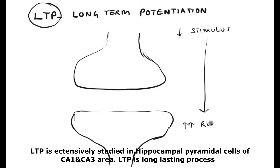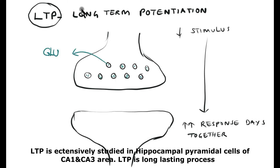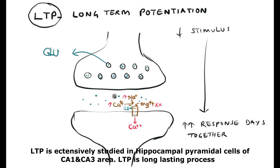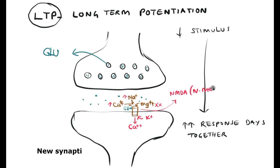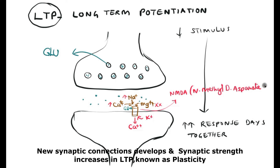Long-term potentiation (LTP) is a very critical molecular mechanism of learning and memory involved in the synapses of the central nervous system. LTP has been extensively studied in the CA1 and CA3 pyramidal cells of the hippocampal area. The magnesium ion usually binds and inhibits the NMDA receptor, which facilitates transportation of calcium and sodium ions inside and potassium outside. When glutamate is released and binds with the NMDA receptor, it facilitates calcium entry inside the postsynaptic neuron.